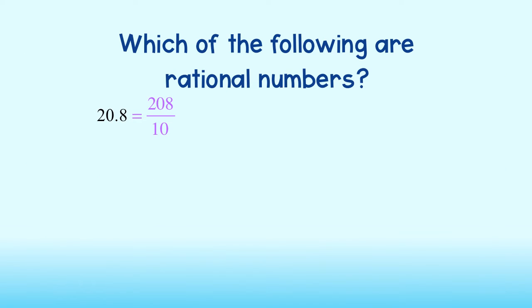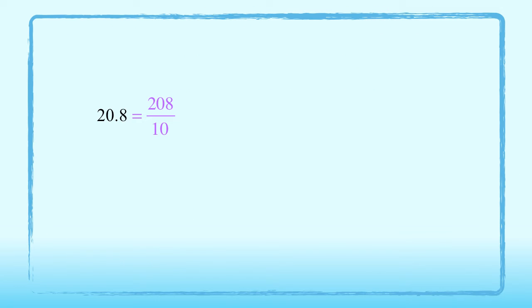Oftentimes, we like to write these fractions in simplest form. In other words, we divide the numerator and the denominator by the greatest common factor. This gives us the smallest number possible in both the numerator and denominator.